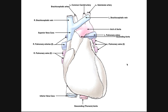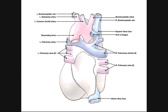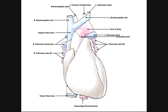Welcome back to Anatomy & Physiology on Catalyst University. My name is Kevin Tokov. In this video, we're going to be discussing some of the surface anatomy of the human heart. We're first going to take a look at an anterior view, then a posterior view. In the next video, we'll be discussing the coronary circulation, and after that, the interior anatomy of the heart.